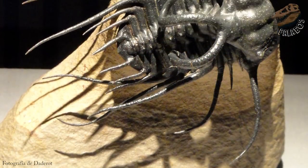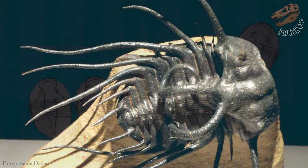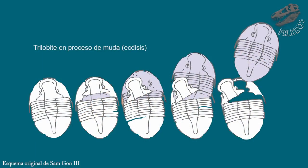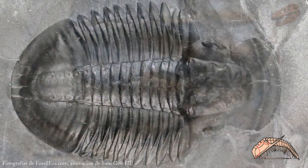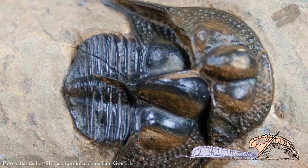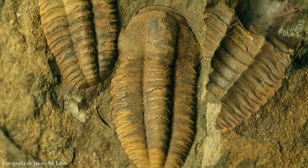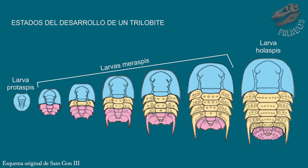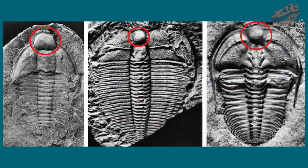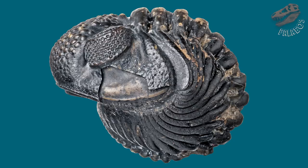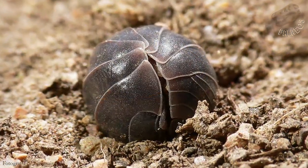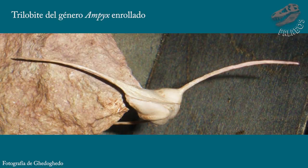La armadura de los trilobites era sin duda excepcional, pero gracias a su rigidez estos animales solo podían crecer al mudarla. Se conocen fósiles de mudas de trilobite y trilobites que murieron y se fosilizaron durante el proceso. Gracias a los miles de fósiles se conoce el ciclo de vida completo con todos los estadios larvarios, así como algunos comportamientos interesantes: algunos cargaban sus huevos en la cabeza en una funda protectora, y otros tenían la capacidad de enrollarse para protegerse de los depredadores, con espinas muy desarrolladas que impedían ser engullidos completos.